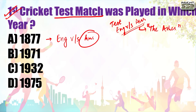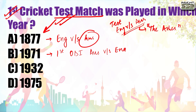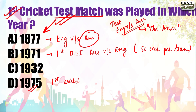Moving on to 1971 - just as the first test match was played in 1877, in 1971 the first One Day International was played. This was also between Australia and England, with 50 overs per team. Then 1975: the first Cricket World Cup was played. This is very important - star mark this. The first World Cup was won by West Indies and was held in England.